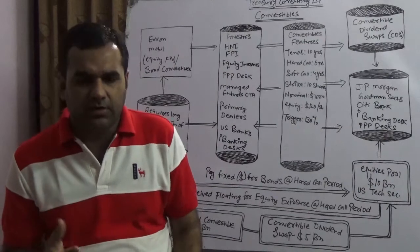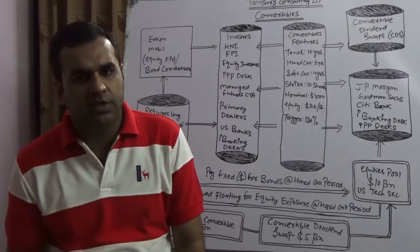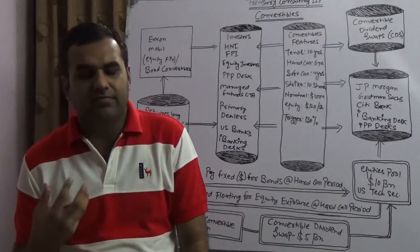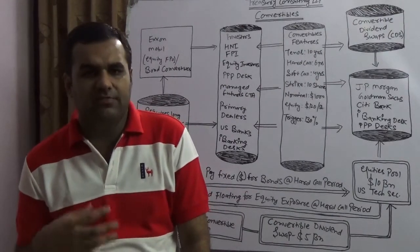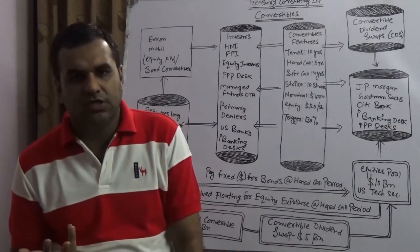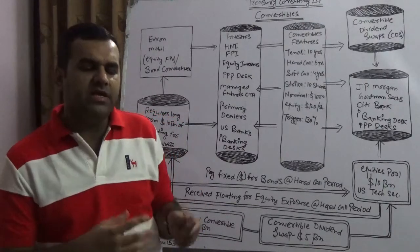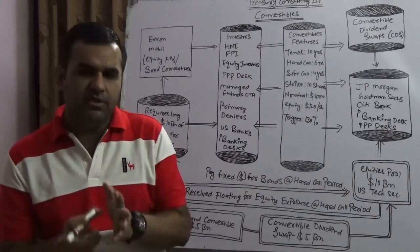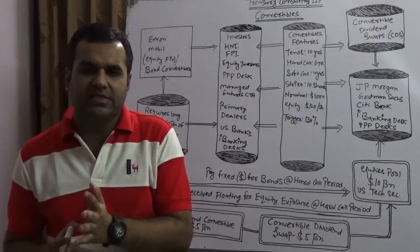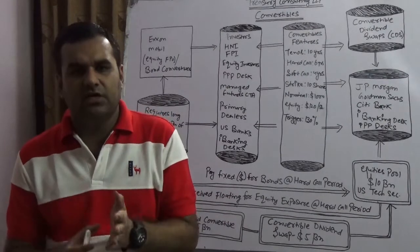Convertibles are a very good instrument, and the convertible market has moved further. There is a lot of action happening: we now have dividend swaps, reverse dividend swaps, and quanto dividend swaps in the convertible market. Here we are going to take an example of a convertible dividend swap, which is CDS. Generally, CDS in financial markets stands for credit default swap, but CDS here has an alternate meaning: convertible dividend swaps.